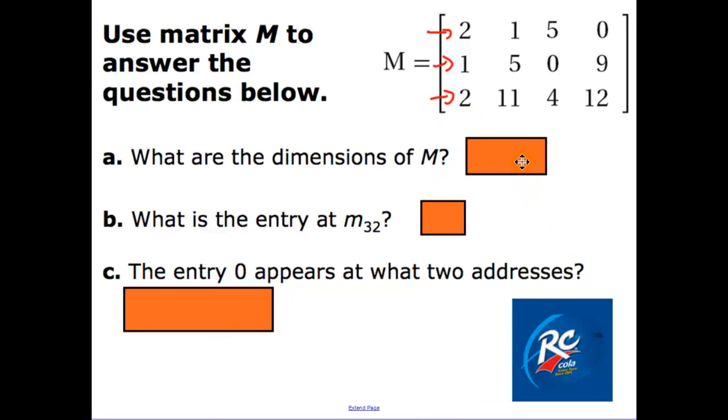Now what is the entry of row three, column two? So row one, two, three, column two, that's 11.